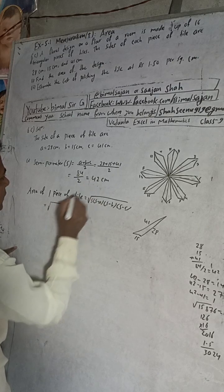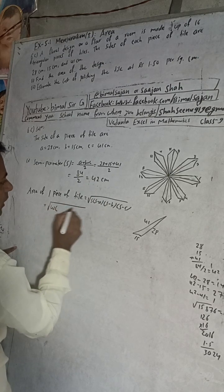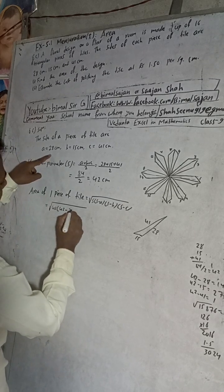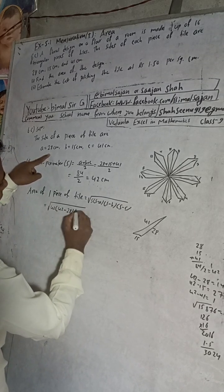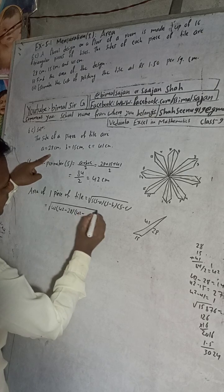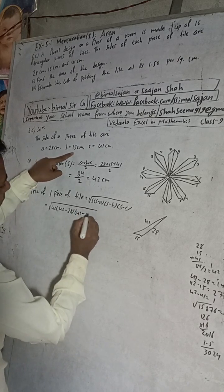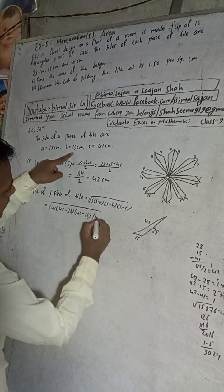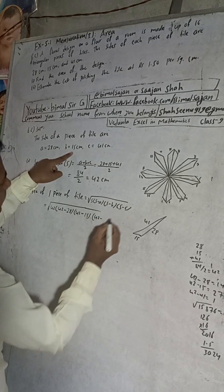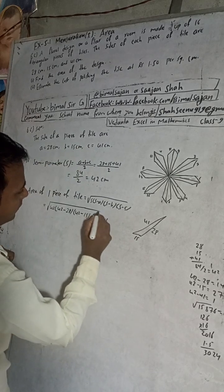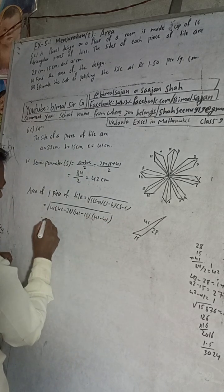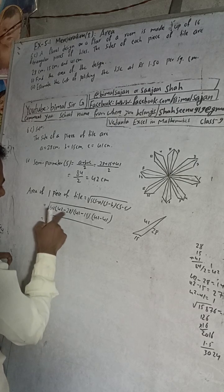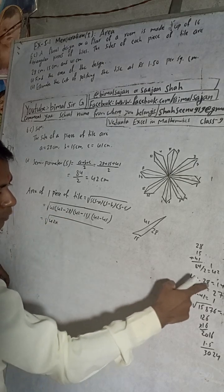So S value, this is our 42, and this is 42 minus A, minus A means 28. And then again S is 42 minus B, what is B? 15. And then again S means 42 minus this C, C value is 41. So 42 into 42 minus 28, 42 minus 28, 14.